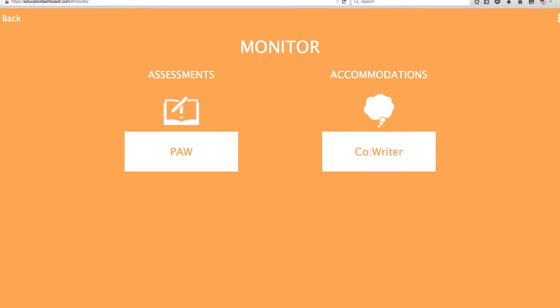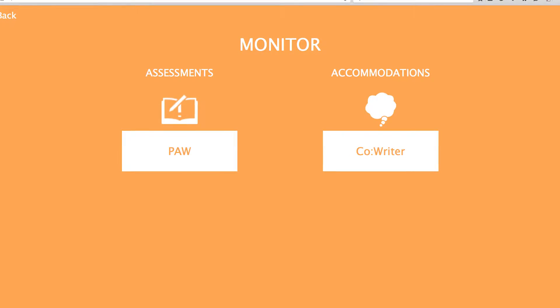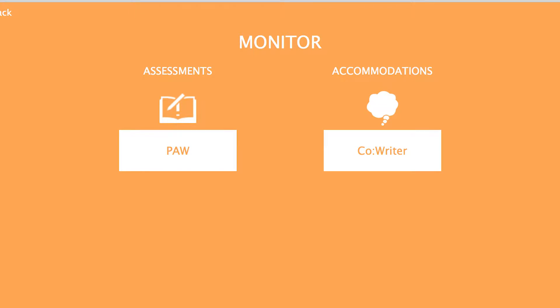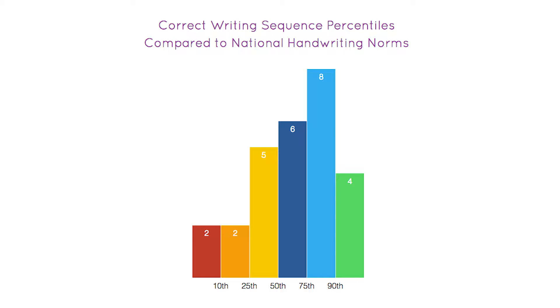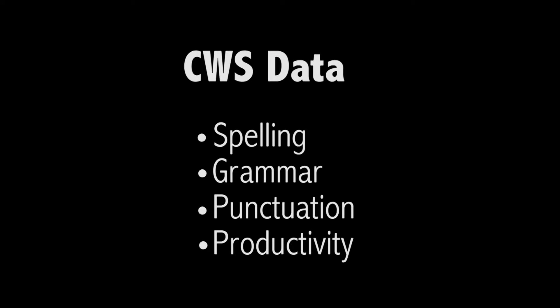The Educator Dashboard and progress monitoring sessions provide quantitative data in the form of correct writing sequence, or CWS, scores. Quantitative data is measurable and each correct writing sequence score yields data about writing aspects such as spelling, grammar, punctuation, and overall productivity.